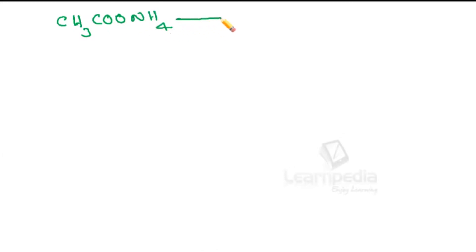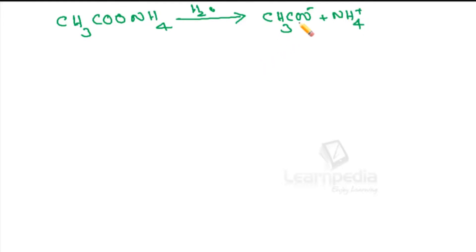Let us now take an example of ammonium acetate, CH₃COONH₄. This ammonium acetate is a salt of weak acid acetic acid and weak base ammonium hydroxide. The moment it is put in water, it undergoes complete ionization to give acetate ion and ammonium ion. The acetate ion, being formed from acetic acid, is a strong base conjugate, whereas the ammonium ion, being formed from weak base, is a strong acid conjugate. Thereby both conjugates are strong in nature and will both compete for reaction with water.